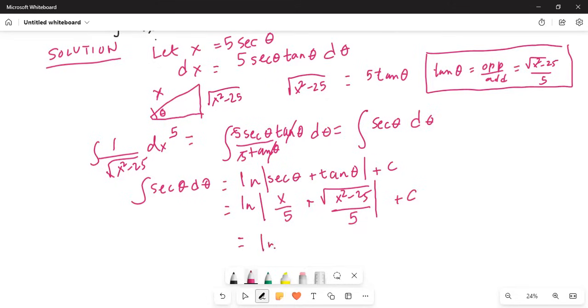So this becomes natural log of x plus square root of x squared minus 25 plus c. You ask, where did the 5 in the denominator go? Natural log of 5 being a constant. That will become a part of the integration constant. So this is your final answer.